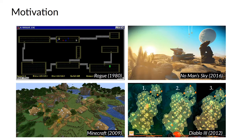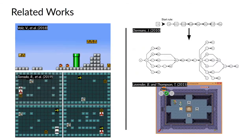The idea of procedural content generation was the main inspiration of this research. We can look back at games such as Rogue, released in 1980, which used this technique to generate dungeons every time you play — the dungeon rooms and pathways are precisely generated and different every new game. Similar ideas appear in modern examples such as Minecraft, which generates infinite worlds with structures and water features, and No Man's Sky, which generates planets and creatures on those planets.